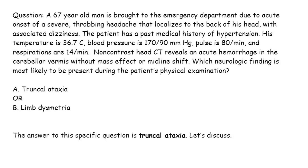Which neurologic finding is most likely to be present during the patient's physical examination — A: truncal ataxia, or B: limb dysmetria? The answer to this specific question is truncal ataxia. Let's discuss.